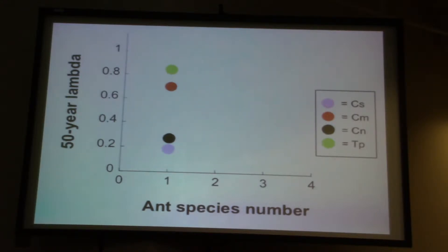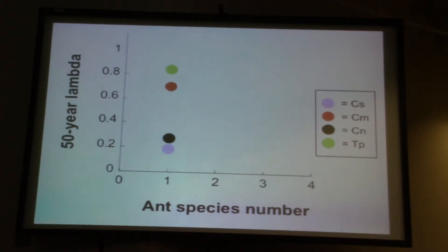Trees that are occupied solely by a sterilizing parasite also don't do very well, as you might expect. Trees that are occupied by a monoculture but are mostly putative good neutralists are actually not the highest single-ant fitness promoter. And so that was a little bit surprising. Tetrapronora pensii occupied trees are actually, in monoculture, doing the best.